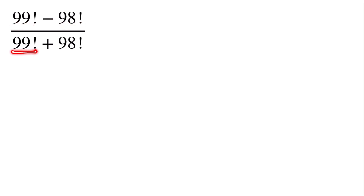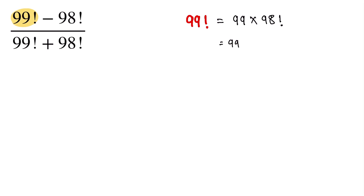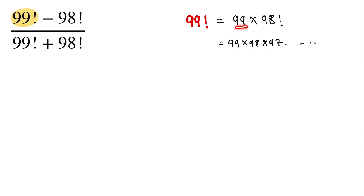So here, 99 factorial can be written as 99 into 98 factorial, because 99 factorial equals 99 into 98 into 97 and so on down to 1. The part from 98 into 97 down to 1 can be written as 98 factorial.